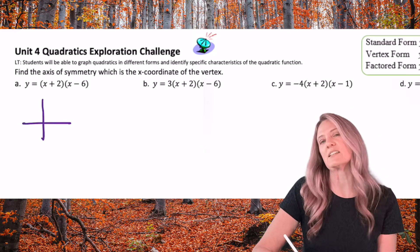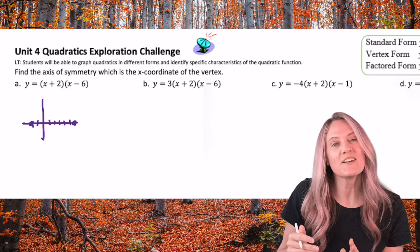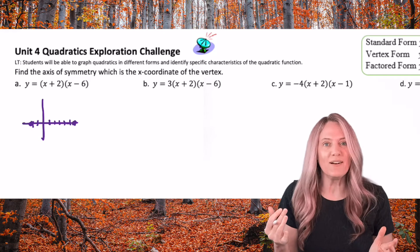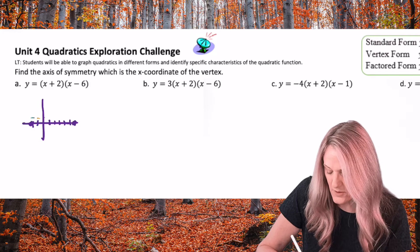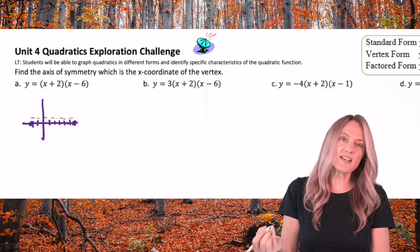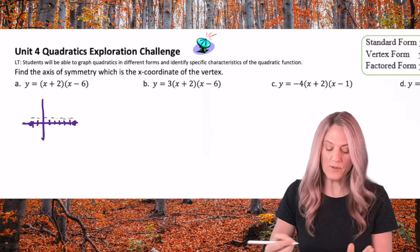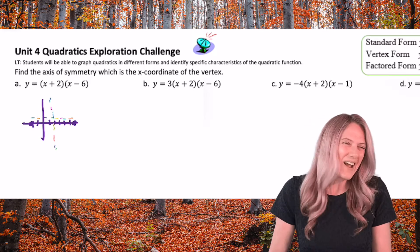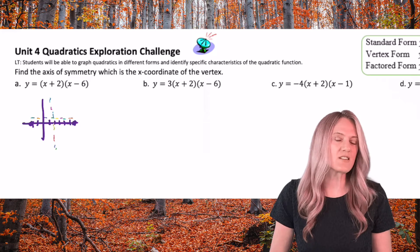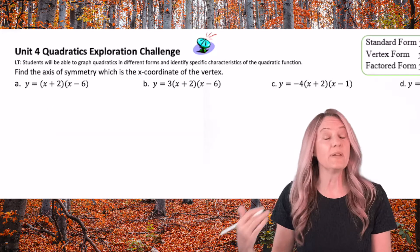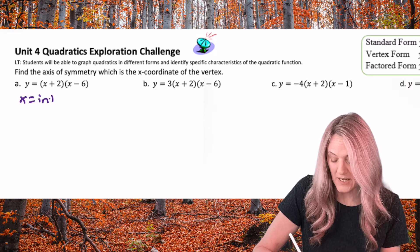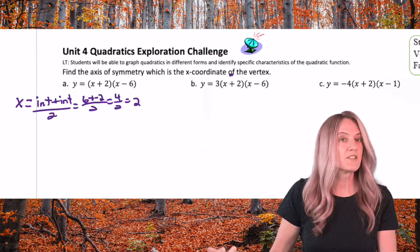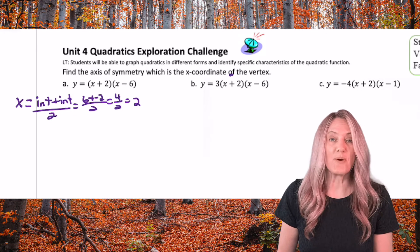We know that the x-intercepts would be negative two and positive six. The axis of symmetry is right in the middle — that's the point of an axis of symmetry. So let's count it: one, two, three, four on each side. The axis of symmetry is x equals two. If I'm not asked to graph it I probably wouldn't, so let's talk about getting it algebraically. x equals intercept plus intercept divided by two, and we get x equals two algebraically.